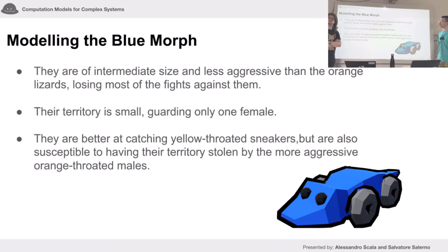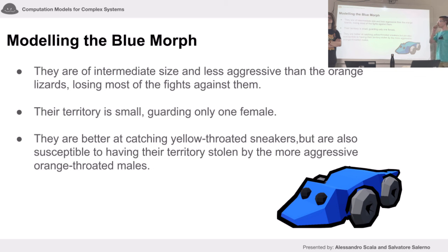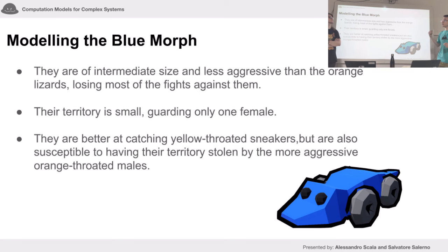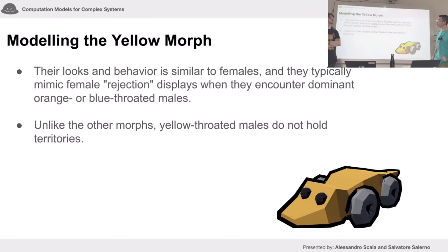The blue morph has intermediate size, is less aggressive, and loses most of its fights, though a blue lizard can beat an orange lizard if it's strong enough. Their territory is small, guarding only one female. Interestingly, blue lizards can cooperate with each other — they don't mate with the other's female, but merge their territories and help each other out, making them better at catching yellow-throated lizards.